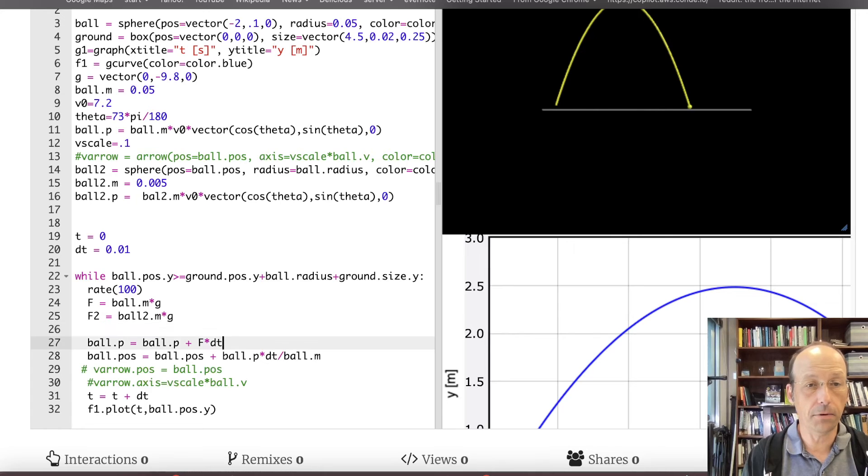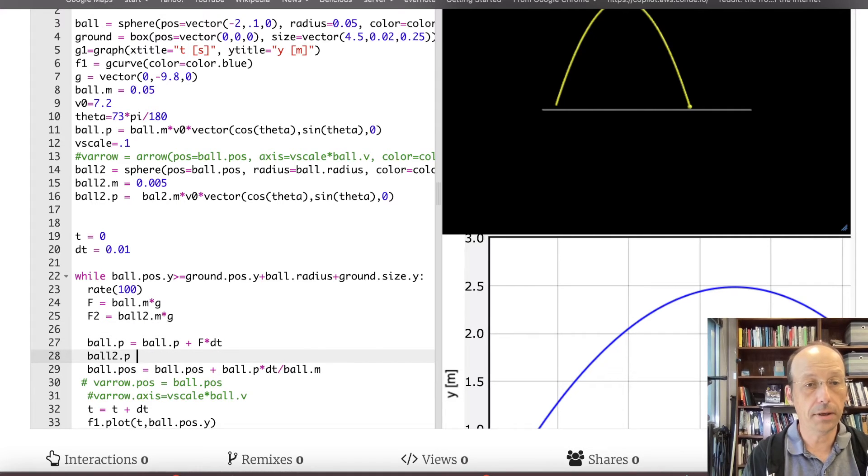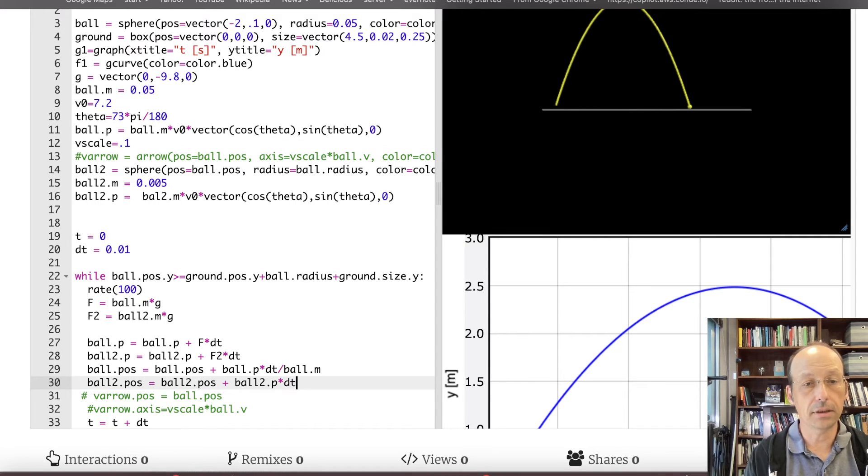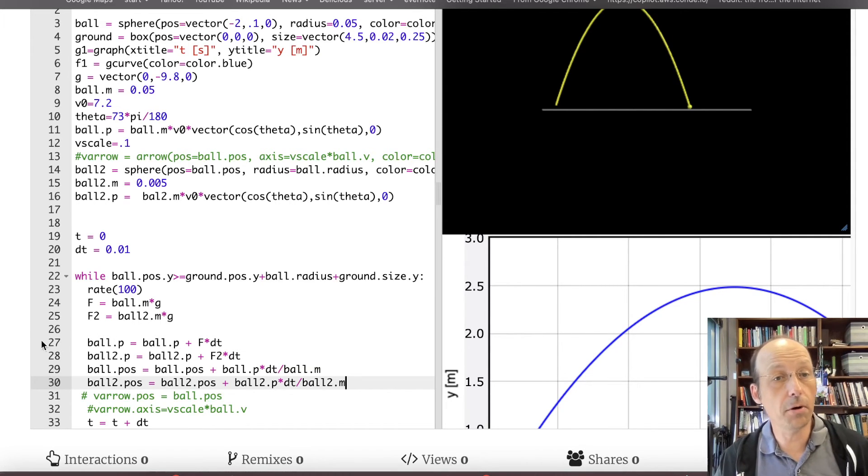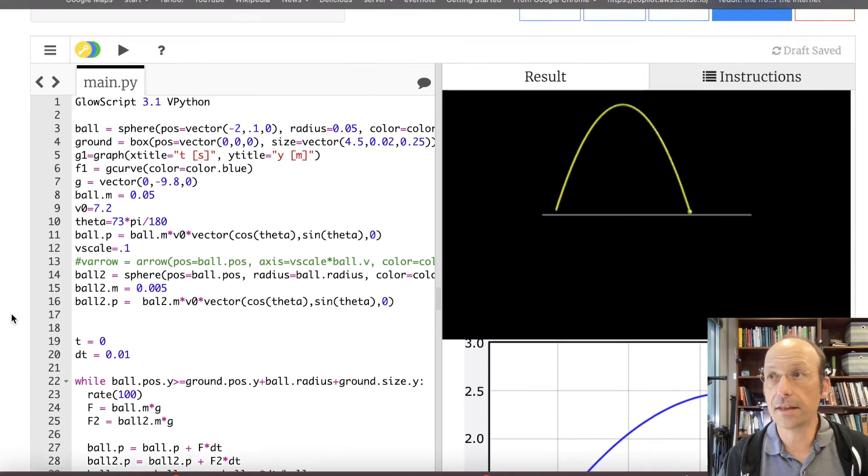That's all for the first ball. Now let's go up here and do the second ball. Ball2 dot p equals ball2 dot p plus f2 times dt. And then down here ball2 dot pos equals ball2 dot p times dt divided by ball2 dot m.